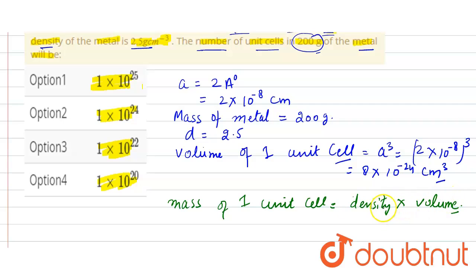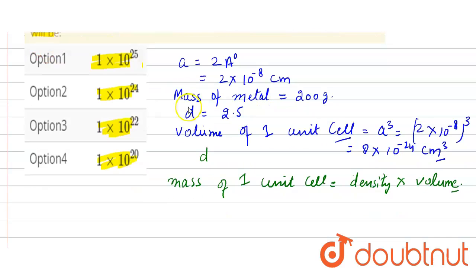So by putting the value here, density we have given is 2.5, 2.5 multiply by volume we have calculated is 8 × 10^-24.